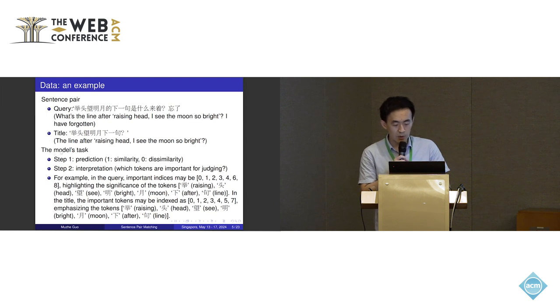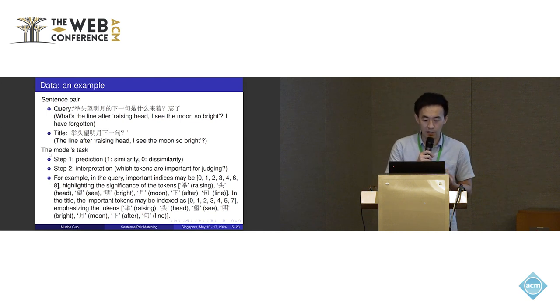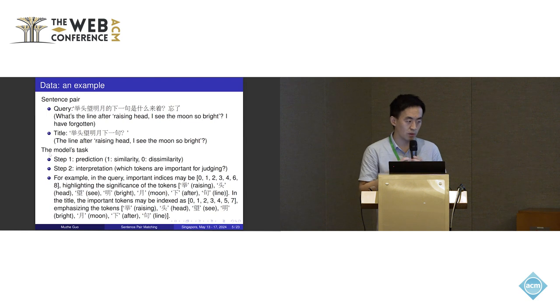Our model's task has two steps. The first step is to make a prediction whether the two sentences are similar or not. The second step is to provide interpretation. The interpretation of the sentence pair matching task is to provide which tokens are important for the model judging, and the model should provide the importance ranking of the tokens in the two sentences.